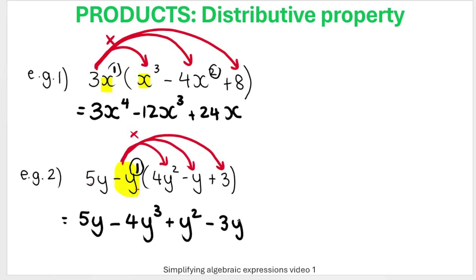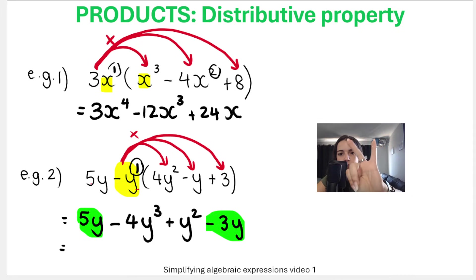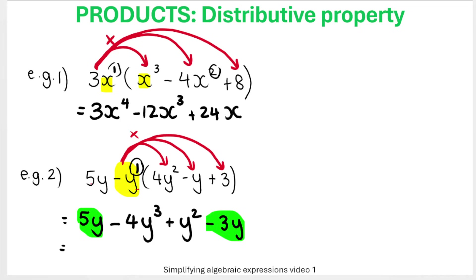Don't move on — you're not done. We need to combine like terms. 5Y and negative 3Y are like terms: 5Y minus 3Y gives 2Y. Written in descending powers, the final answer is negative 4Y cubed plus Y squared plus 2Y.